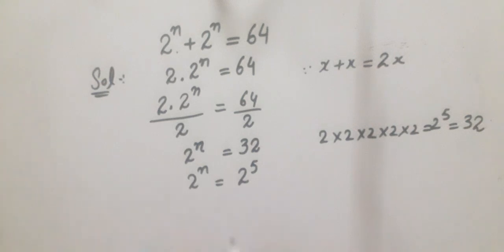Now we know that when the bases are the same, we can equate the exponents. So the final answer of this equation is n is equal to 5. I hope you understand this. Now I will assign a question to solve.